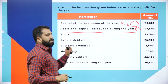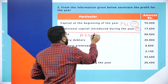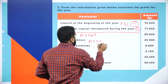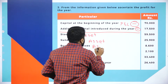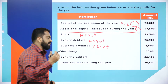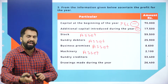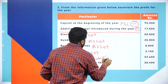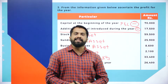Stock is an asset, so it will come under the asset side. Sundry debtors are receivables — that is also an asset. Business premises means the building, so it will come under asset. Machinery is used for manufacturing purposes, so it is also an asset. Sundry creditors means you need to make payments, so we call it a liability. Drawings made during the year will not come under the balance sheet — it will come under the profit and loss account.